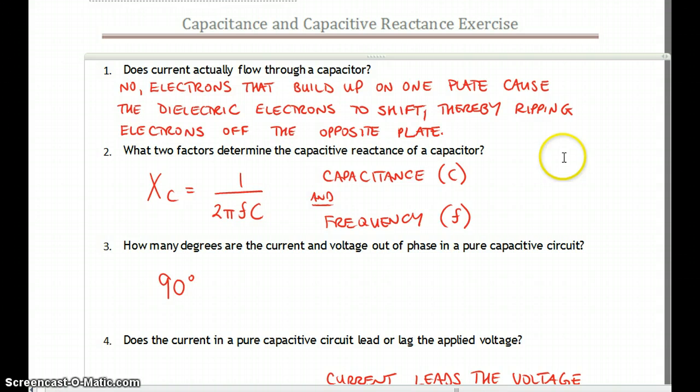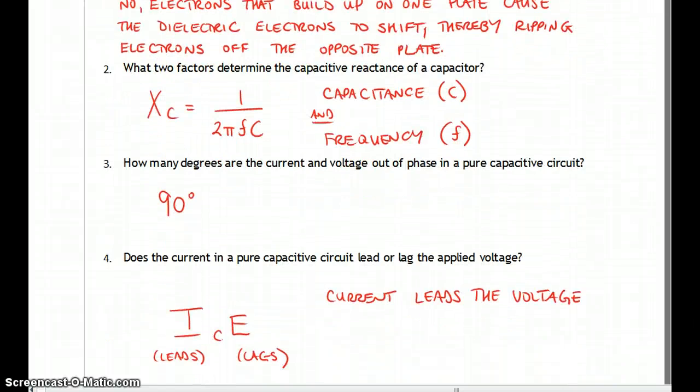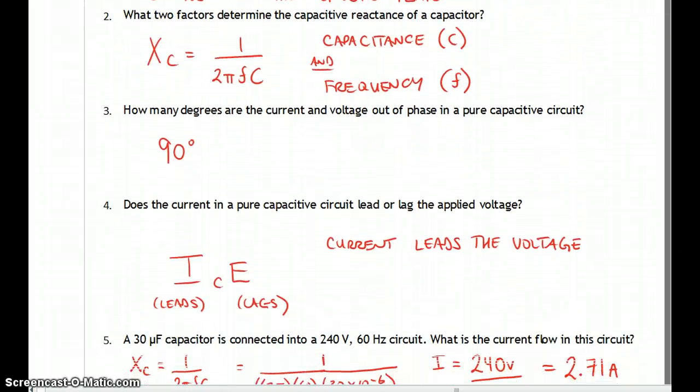Number three, how many degrees are the current and voltage out of phase in a purely capacitive circuit? Same as with an inductive circuit, they are 90 degrees out of phase compared to a resistive load.